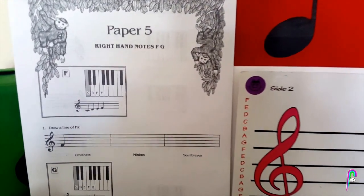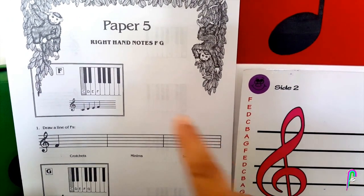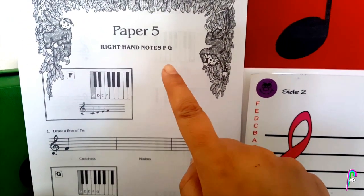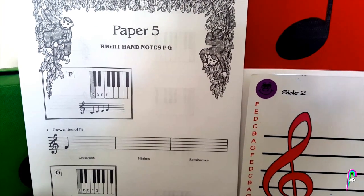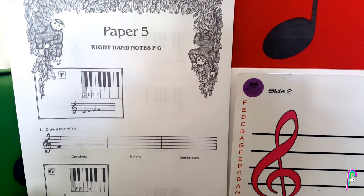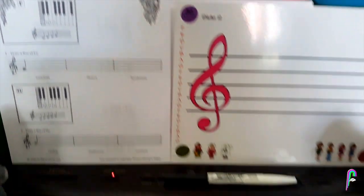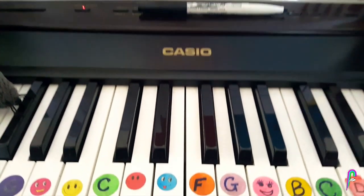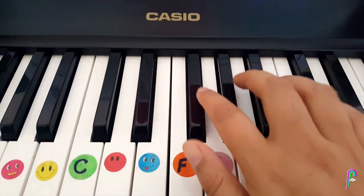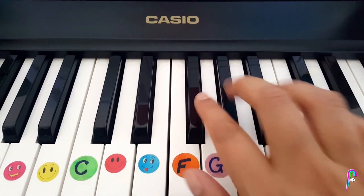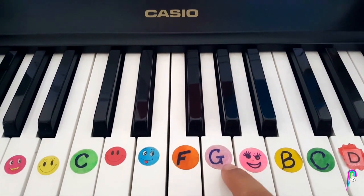Let's have a look at our paper five and it says right hand notes F and G. So let's have a look on the piano. Where are the right hand notes for F and G? Let's move on down and there we go. There are the three black keys and there is F and G.